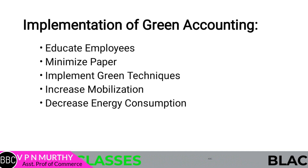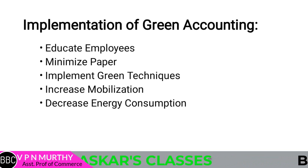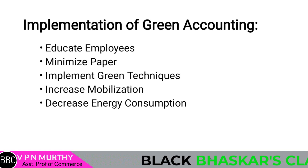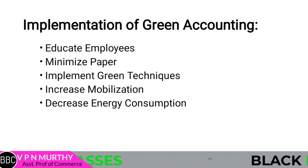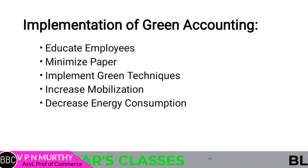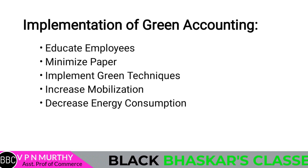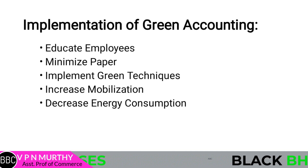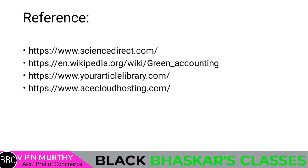Next is to decrease energy consumption. Use energy-saving bulbs and implement light sensors. Whenever you leave a room, if there is a light sensor, it will switch off by itself. Using such technologically advanced apparatus will definitely decrease the consumption of energy, thereby decreasing the depletion of natural resources. This is all about the implementation of green accounting. Thank you for watching this video. Thank you all.